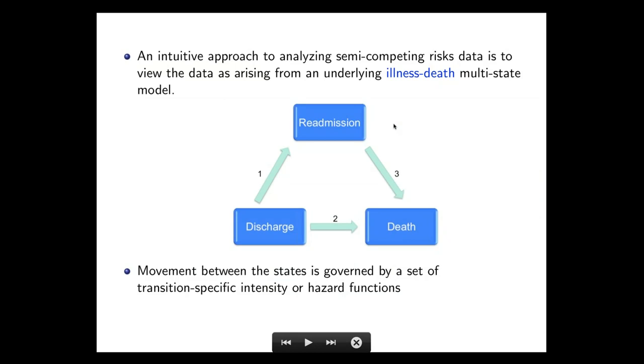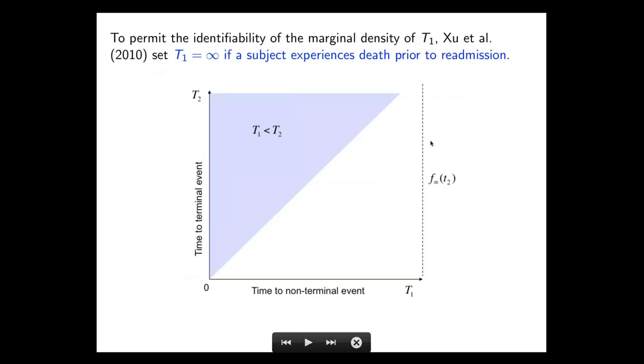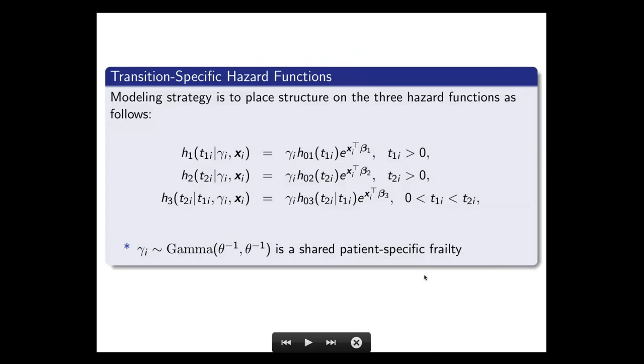But there is also issue with the semi-competing risk approach. Like I said, if a patient dies prior to readmission, time to readmission will not be observed. So we have some identifiability issue. That's because if you see this graph, this is time, T1 is time to non-terminal event, readmission, and T2 is time to death, terminal event. You only observe the data from this upper wedge of positive quadrant. So the joint distribution of T1 and T2 cannot be identifiable on the lower wedge of this positive quadrant using observed data. So you need some modeling assumption, but it is not testable using your data. So that's the identifiability issue in this semi-competing risk problem.